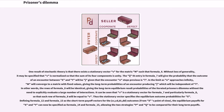In the limit as N approaches infinity, M will converge to a matrix with fixed values, giving the long-term probabilities of an encounter producing outcome j, which will be independent of i. In other words, the rows of the limiting matrix will be identical, giving the long-term equilibrium result probabilities of the iterated prisoner's dilemma without the need to explicitly evaluate a large number of interactions. It can be seen that V is a stationary vector for the limiting matrix, so that each row will be equal to V — thus the stationary vector specifies the equilibrium outcome probabilities for X. Defining the short-term payoff vectors for the CC, CD, DC, DD outcomes, the equilibrium payoffs for X and Y can now be specified, allowing the two strategies P and Q to be compared for their long-term payoffs.